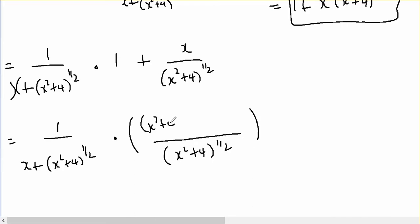I'm going to have x squared plus 4 to the half plus x, and that cancels because they're identically the same.